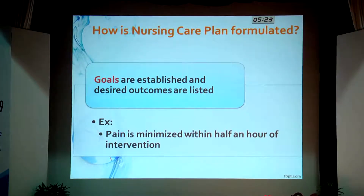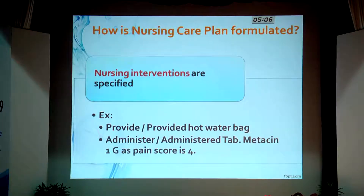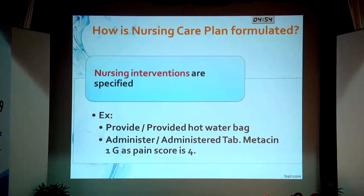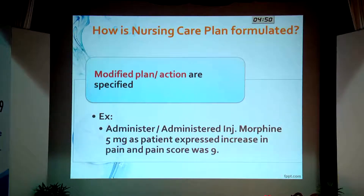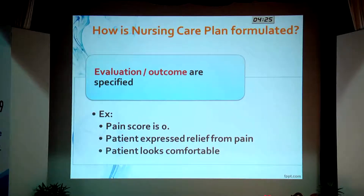After assessment, a goal or outcome has to be planned — for example, pain is minimized within a specified time. It has to be very specific because interventions must be focused accordingly. The nurse comes up with interventions according to the level of pain — whether it's providing a hot water bottle or providing a medication like paracetamol. The nurse continues to assess and monitor. If the pain does not reduce adequately, she moves to the next level of intervention with a medical order — for example, requesting morphine. The nurse continuously monitors and changes the plan until the patient is completely relieved of pain.